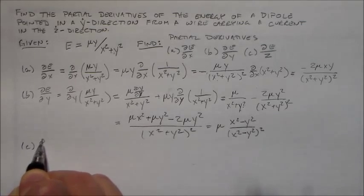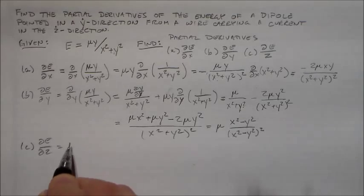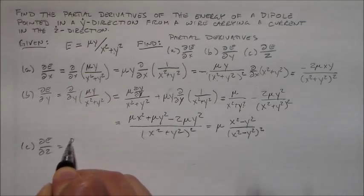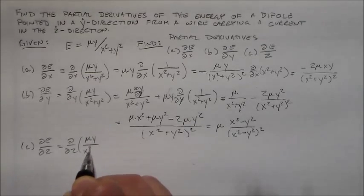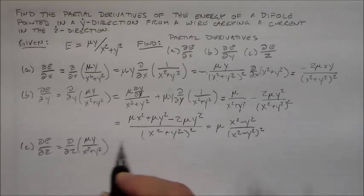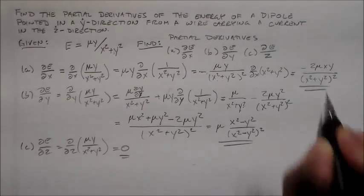That seems pretty nice there. And finally we have dE/dz which is equal to d/dz μy over x squared plus y squared. All this stuff is just a constant, so that's equal to zero. Alright, so those are these guys here.